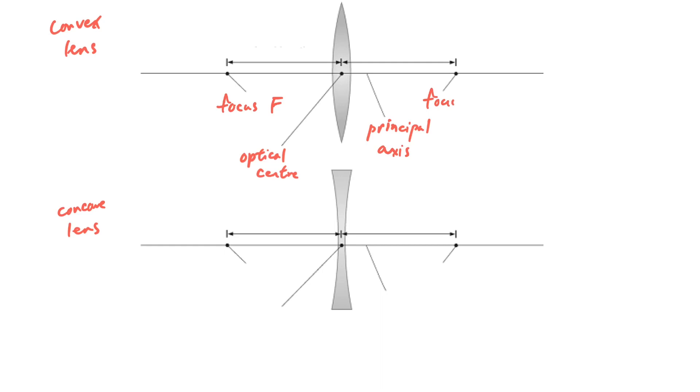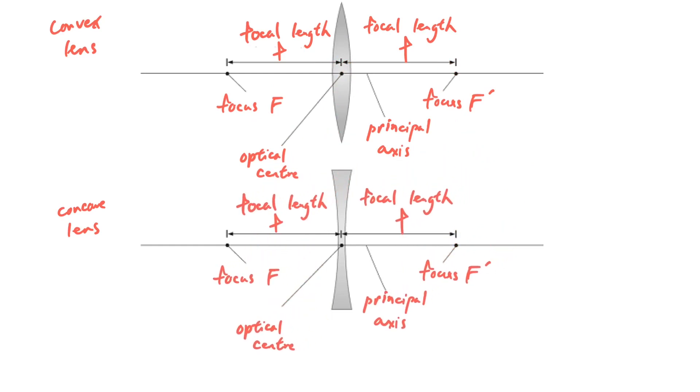For the lens, we have focus on two sides. The distance from the focus to the center is called the focal length. We use the small letter f to represent it. All these names can also be applied to concave lens.